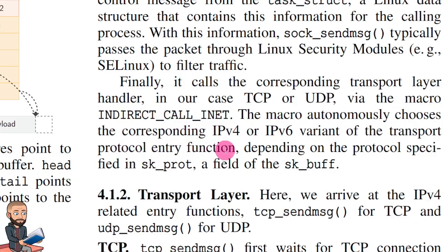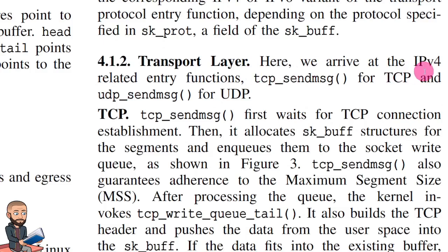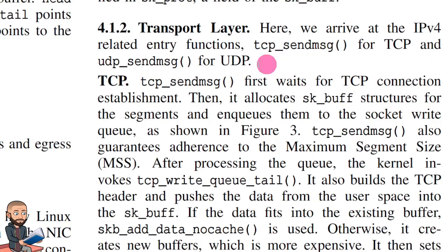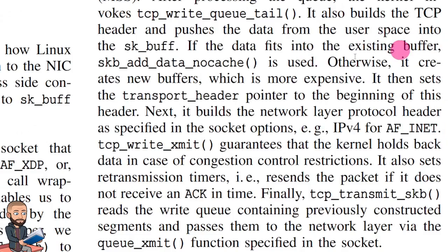Now, transport layer. Here we arrive at the IPv4 related entry functions: TCP send message and UDP. TCP first waits for the TCP connection establishment — you could use those commands mentioned earlier to see what connections have been established. Then it allocates sk_buff structures for the segments and enqueues them to the socket write queue, as shown in figure 3. TCP send message also guarantees adherence to the maximum segment size, MSS. After processing the queue, the kernel invokes TCP write queue tail. It also builds the TCP header and pushes the data from user space into the sk_buff. If the data fits into the existing buffer, skb_add_data_nocache is used; otherwise it creates new buffers, which is more expensive. It then sets the transport header pointer to the beginning of this header. Next, it builds the network layer protocol header as specified in the socket options, for example IPv4 for AF_INET.